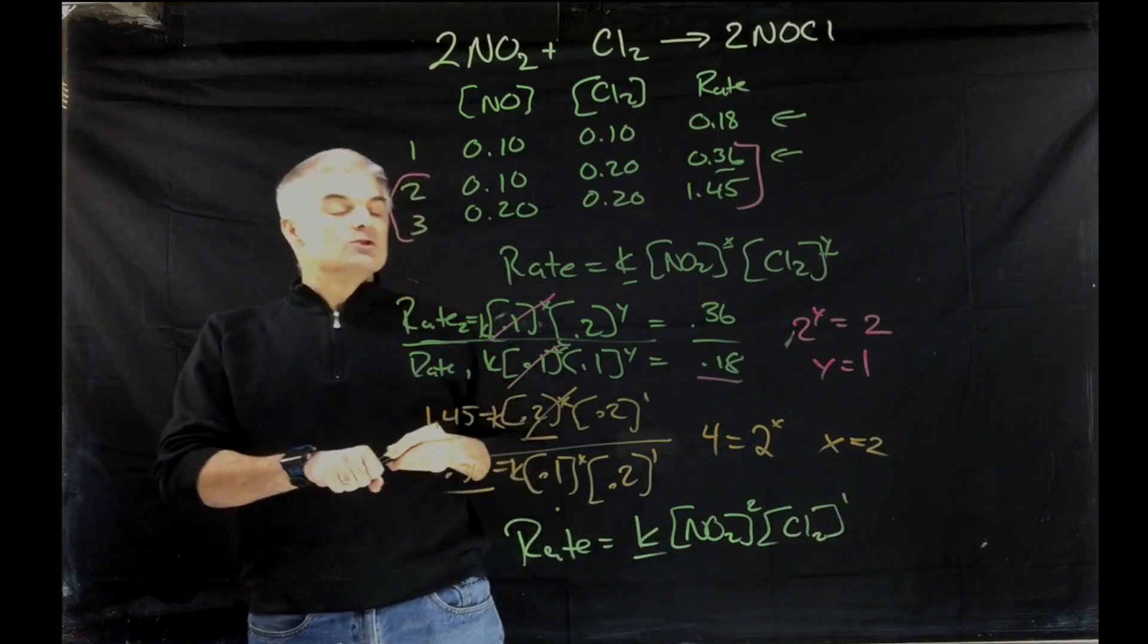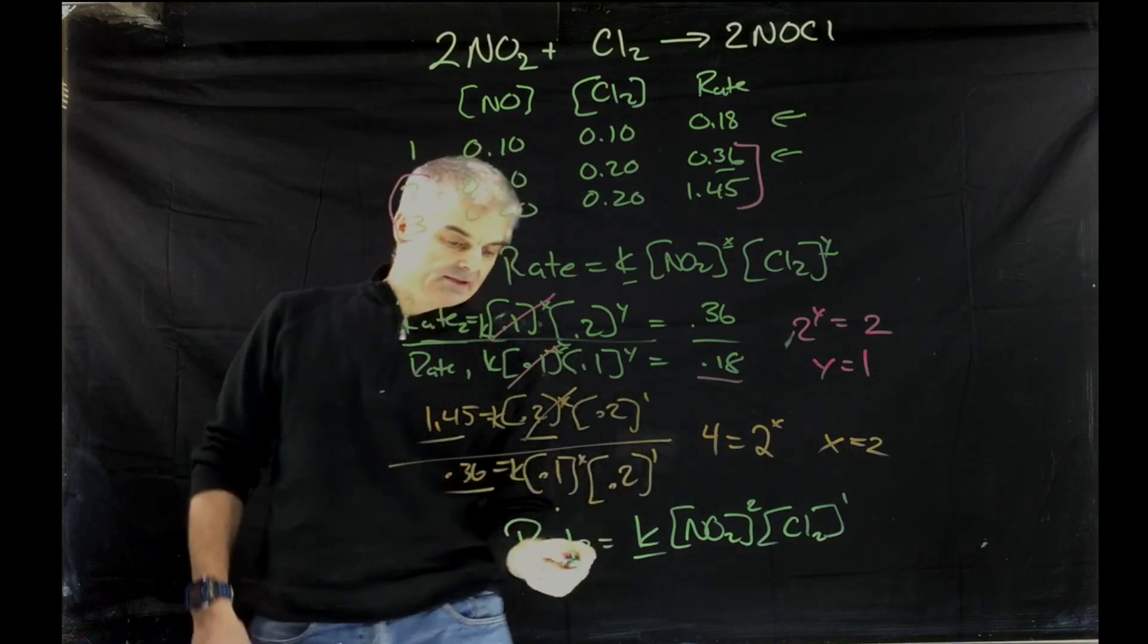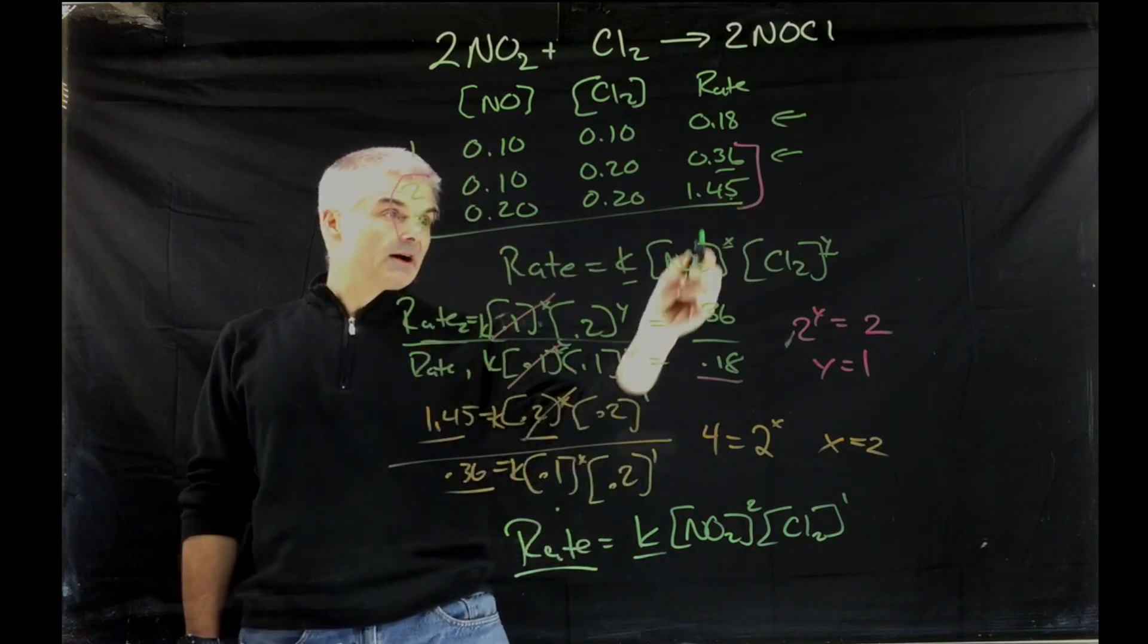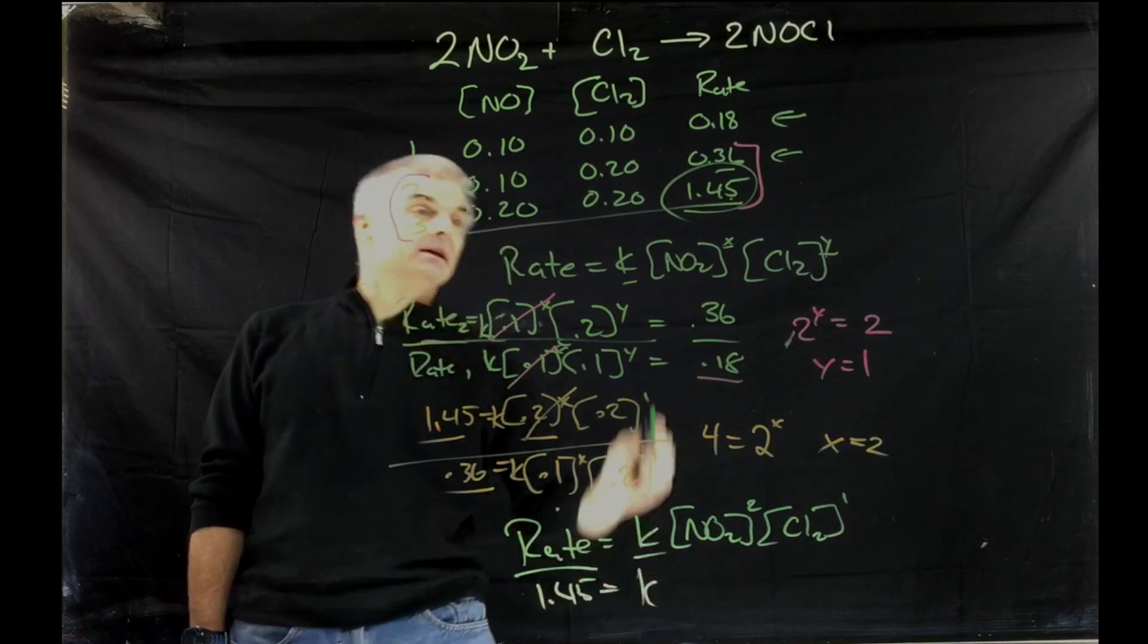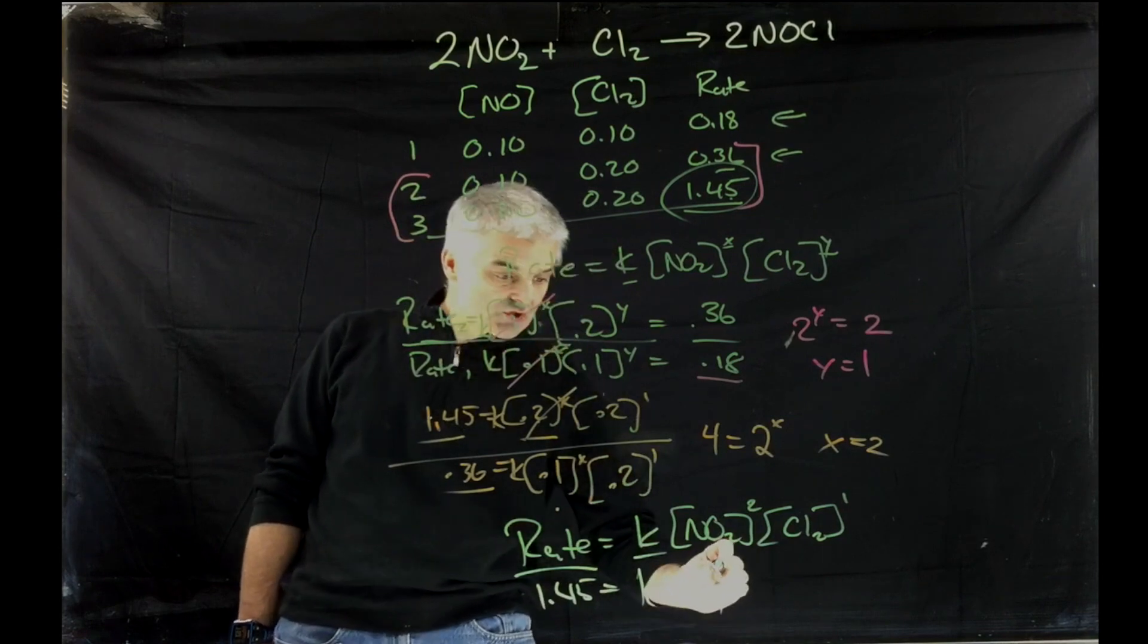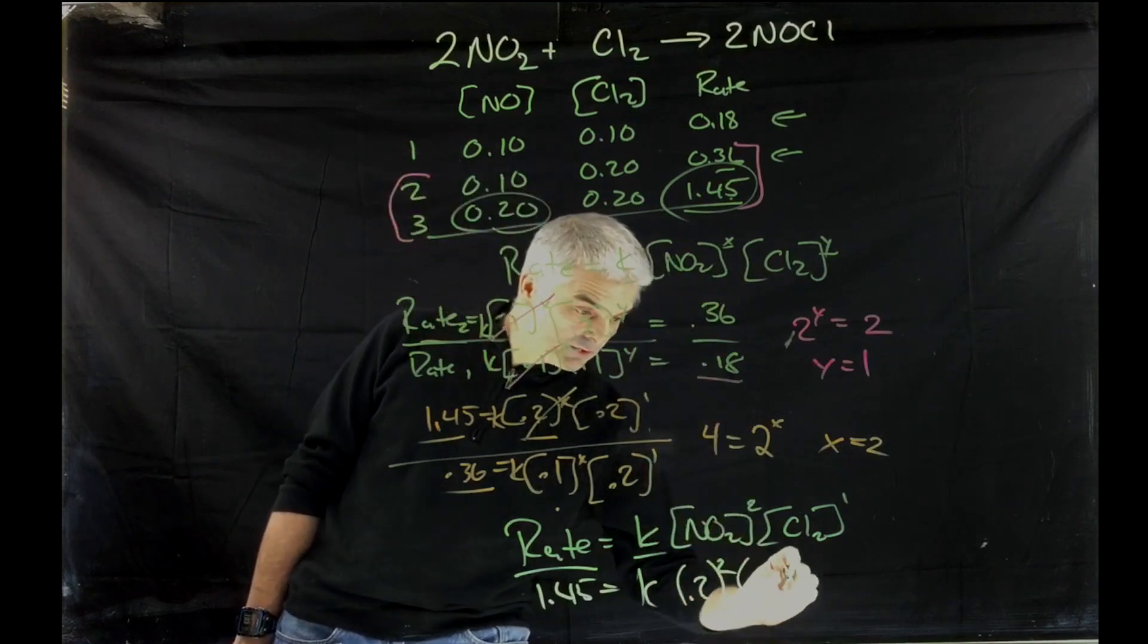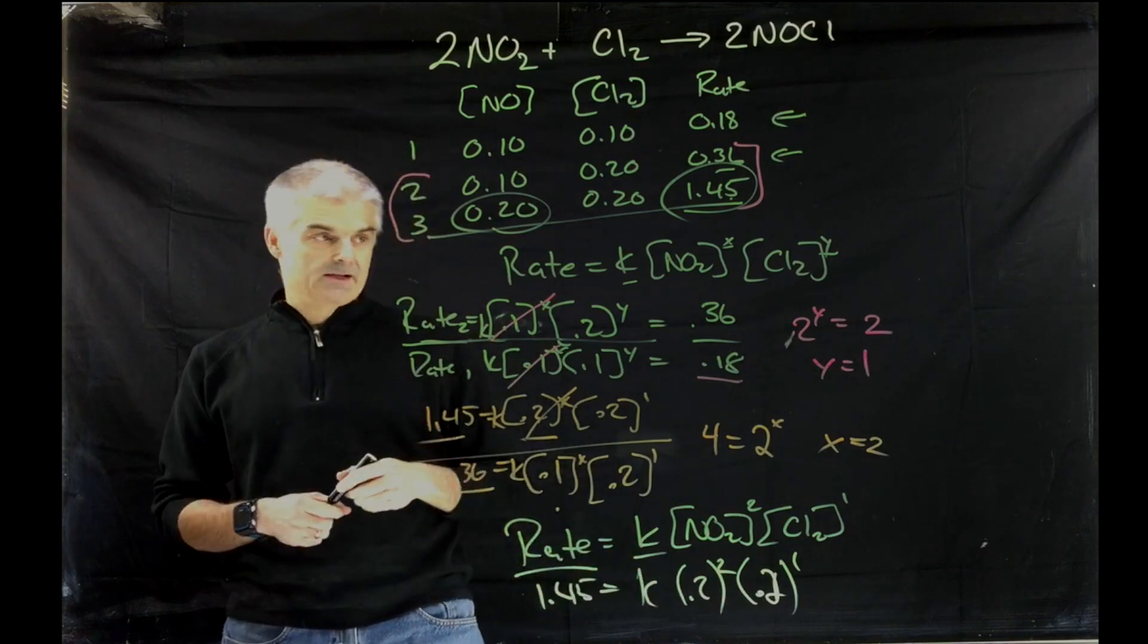Now, to solve for the value of k, you simply plug your numbers in. Because you now know what the rate is, right? You can take any one of these reactions. So let's say, for example, reaction 3 here. I would plug in 1.45. So I'd write 1.45 is equal to k times .2 squared times .2 to the first. And you divide both sides and you find your rate constant.